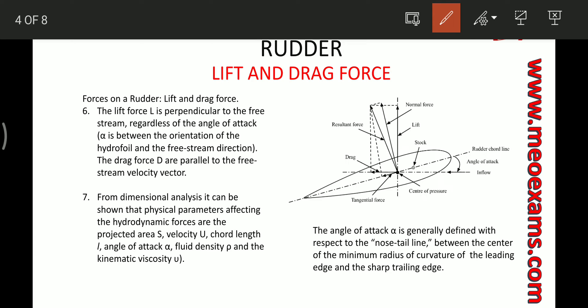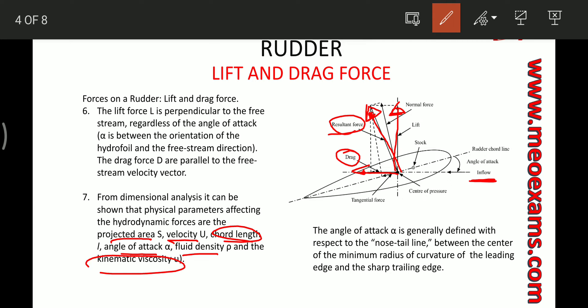There is a net resultant force developed on this profile. If we break down this resultant force, we get the lift force, which acts perpendicular to the inflow direction, and the drag force, which acts parallel to the inflow direction. With the help of dimensional analysis, we can find the values of these forces. These forces basically depend upon the projected area, velocity, angle of attack, fluid density, chord length, and kinematic viscosity — and the Reynolds number depends on chord length and kinematic viscosity.